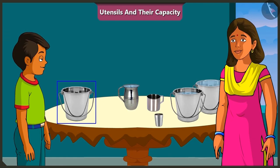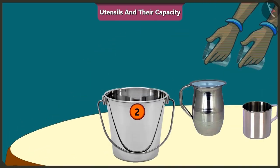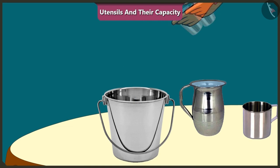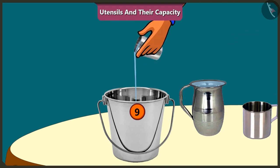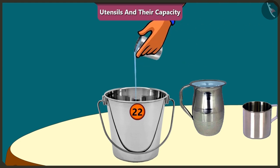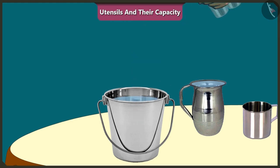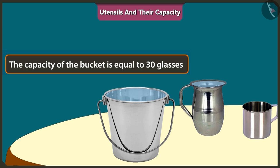Mummy, now to fill this bucket, how many glasses of water would be required? Come on, let's pour and see. One, two, three, four, five, six, seven, eight, nine, ten, eleven, twelve, thirteen, fourteen, fifteen, sixteen, seventeen, eighteen, nineteen, twenty, twenty-one, twenty-two, twenty-three, twenty-four, twenty-five, twenty-six, twenty-seven, twenty-eight, twenty-nine, thirty. To fill this bucket completely, we have to pour thirty glasses of water in it. So, the capacity of this bucket is equal to thirty glasses of water.